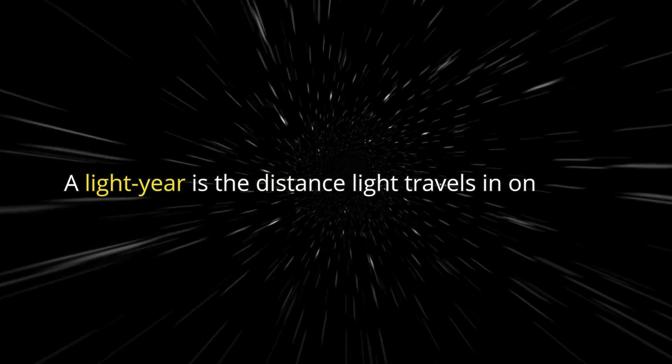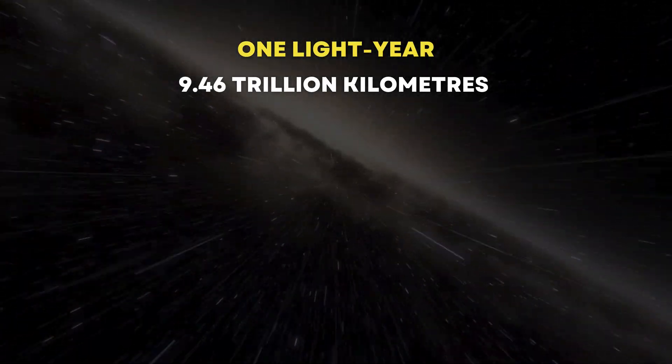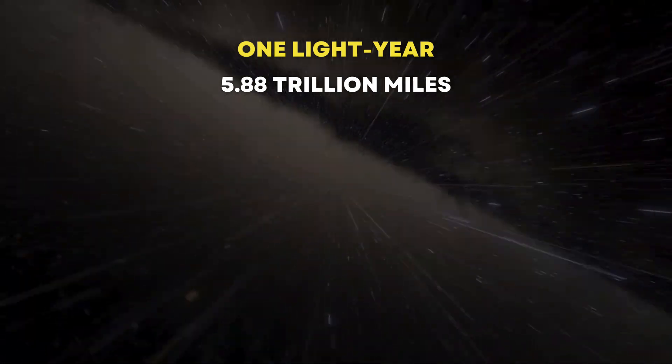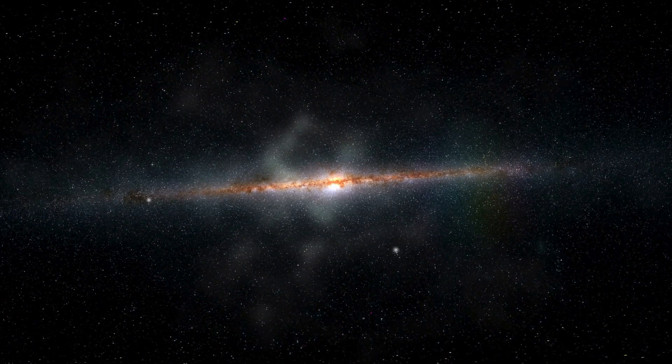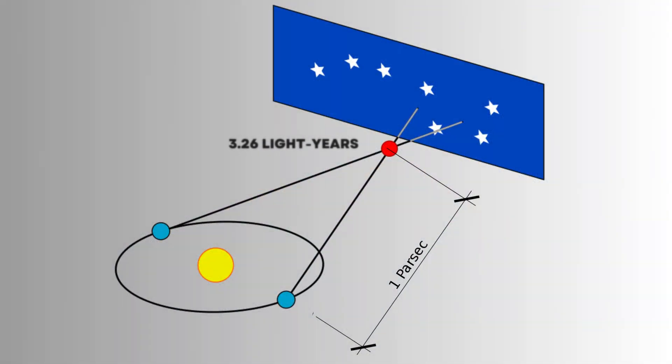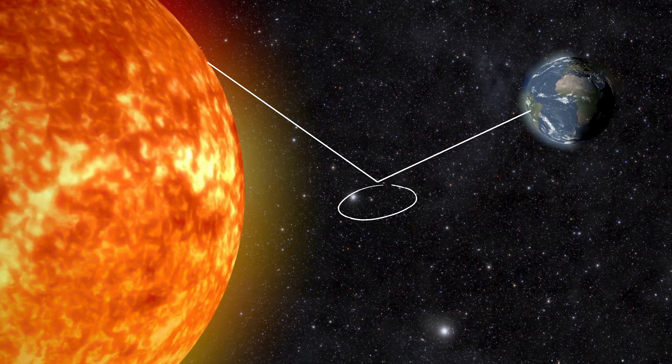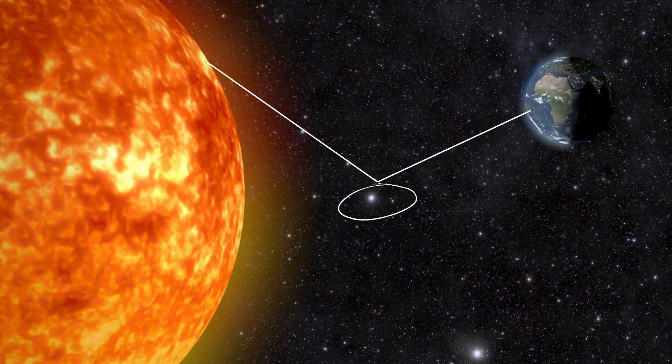A light year is the distance light travels in one year, about 9.46 trillion kilometers or 5.88 trillion miles. It's useful for measuring distances to stars and galaxies. A parsec is equal to about 3.26 light years and is most commonly applied to measure vast astronomical distances from outer space.